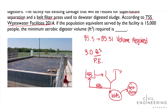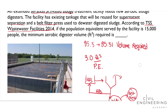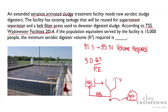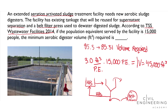So that's a schematic of what the treatment process described in this problem looks like. Knowing that information, we use 3.0 as our conversion factor. To solve the problem, we multiply that by our population: 15,000 people or population equivalents. From that, we get a volume of 45,000 cubic feet, and that is our answer.